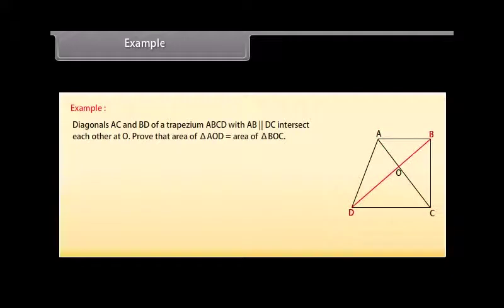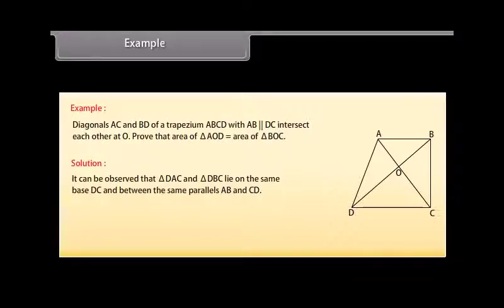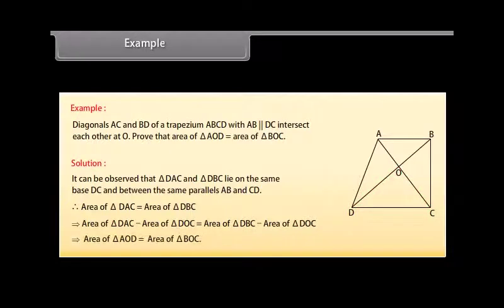Diagonals AC and BD of a trapezium ABCD with AB parallel to DC intersect each other at O. Prove that area of triangle AOD is equal to area of triangle BOC. Solution: It can be observed that triangle DAC and triangle DBC lie on the same base DC and between the same parallels AB and CD. Therefore, area of triangle DAC is equal to area of triangle DBC. Which implies, area of triangle DAC minus area of triangle DOC equals area of triangle DBC minus area of triangle DOC, which implies area of triangle AOD is equal to area of triangle BOC.